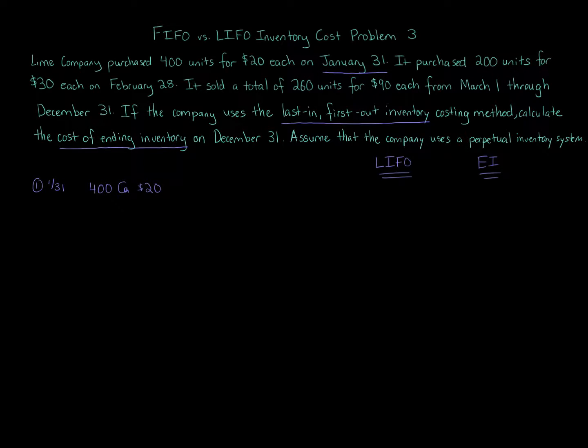Okay, the next layer. We're told the company purchased on February 28th, 200 units. So February 28th, layer two, 200 units at $30 each. That's the next layer. All right. So those are our purchases. You can put that over here, purchases, company owned, or company has these items.